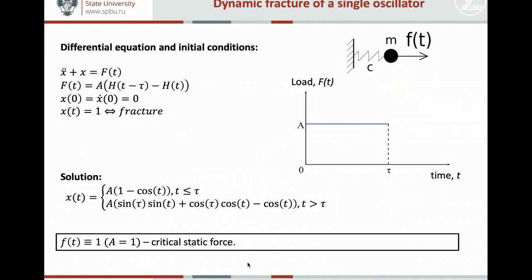So we are going to start with a very simple problem of a linear oscillator. As we all probably know, even from school, that the motion of such a system is described by a second order differential equation, which can be easily solved for any type of load applied to the mass. Here we apply a pulse load. We are interested in the behavior of such a system subjected to a pulse load. This is the pulse. It has amplitude A and duration tau.